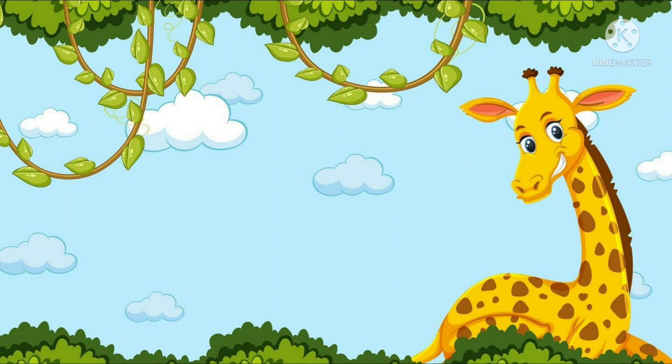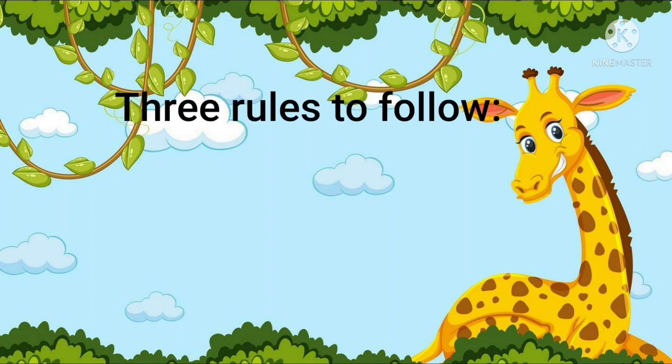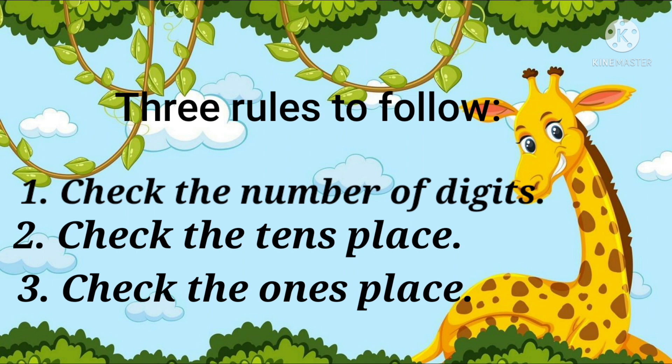Similarly, we will arrange numbers in ascending order. For that, you have to follow three rules. First, check the number of digits — if we have a single digit number and a double digit number, we can easily figure out the smaller one, as a single digit number will be smaller than a double digit number. If the digits are the same, check the tens place and compare. If the numbers are the same in the tens place, then check the ones place and compare again. You will understand this further when we solve some questions together.